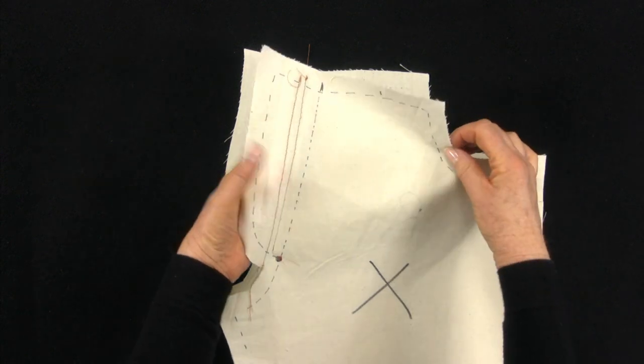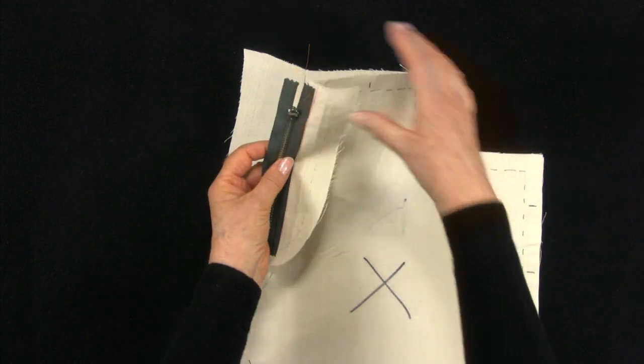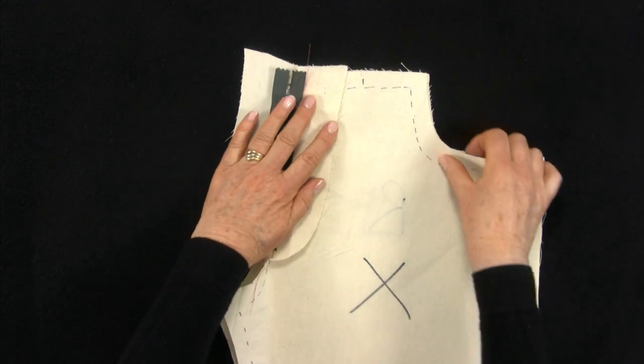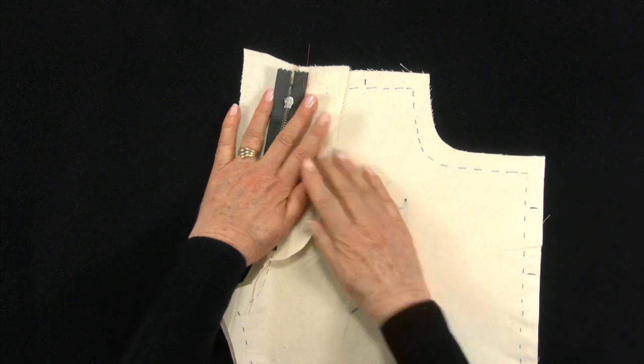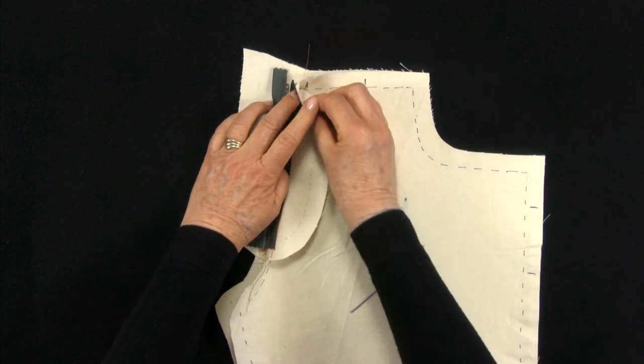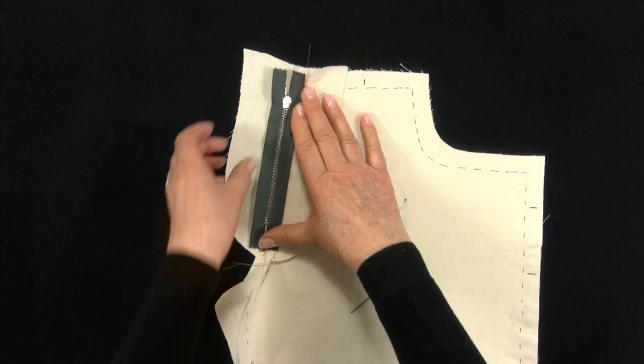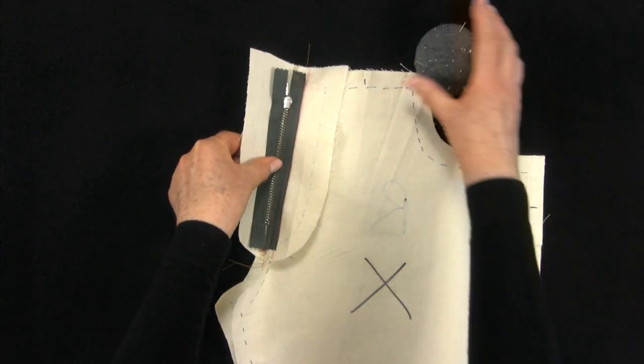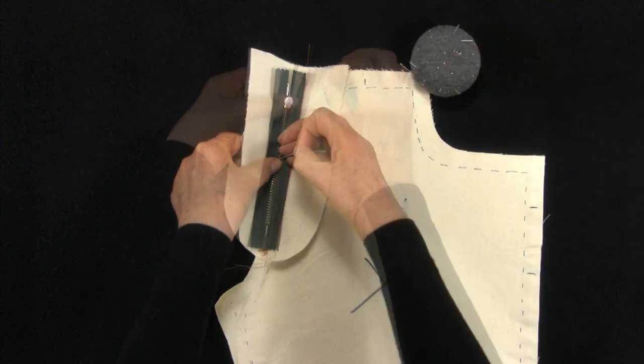Place the two fronts right sides together, zip facing up. The right front extension is folded back. You will find the zip falls into place. Check the fronts are lined up at the notches and seams. Use a couple of pins to keep the zip in place.